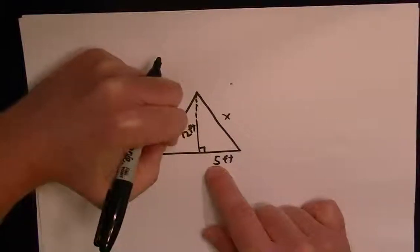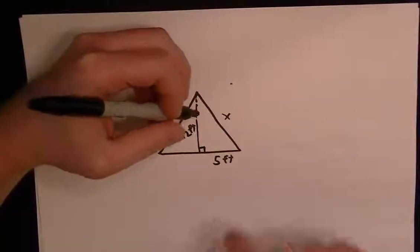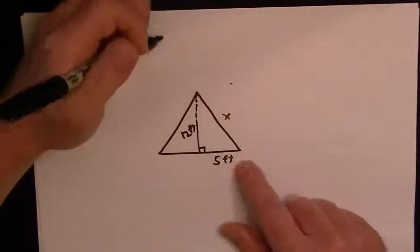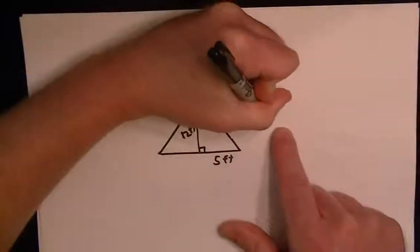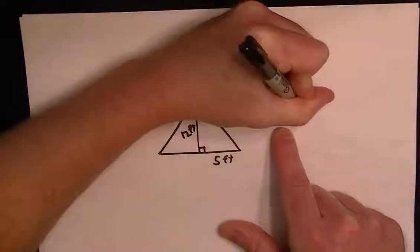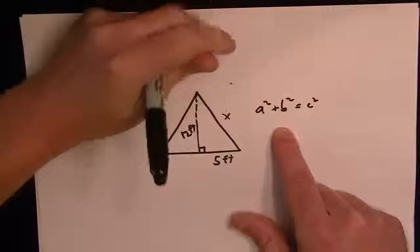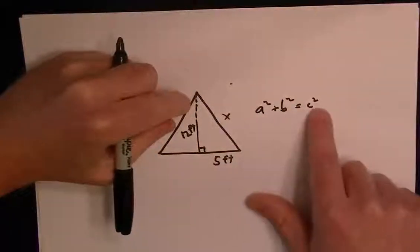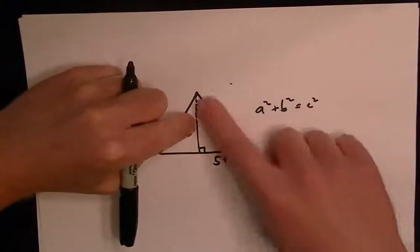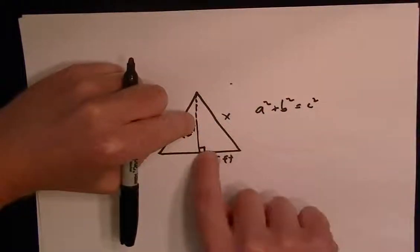We take this side squared plus this side squared equals x squared. In other words, the formula is typically shown as a² + b² = c². The important thing to remember is that c² is called the hypotenuse, and that's the side opposite from the right angle.